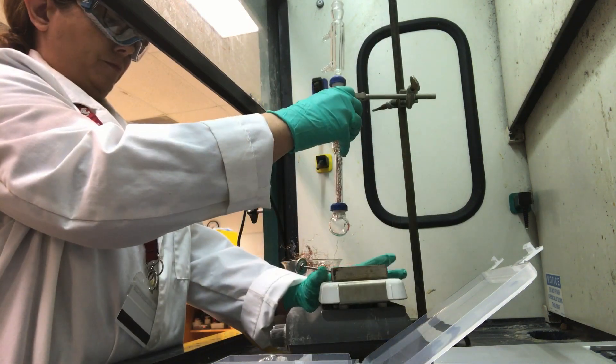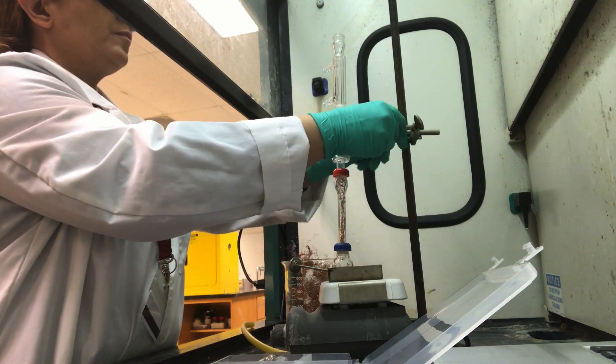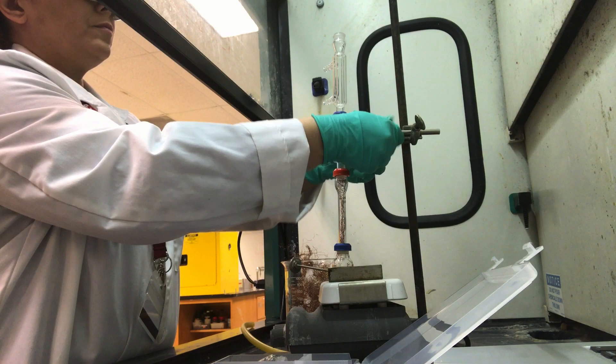Rest the round-bottom flask in the large well of an aluminum block supported by a stirring hot plate and clamp the apparatus in place.